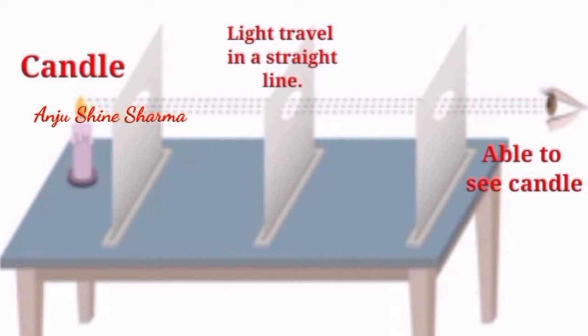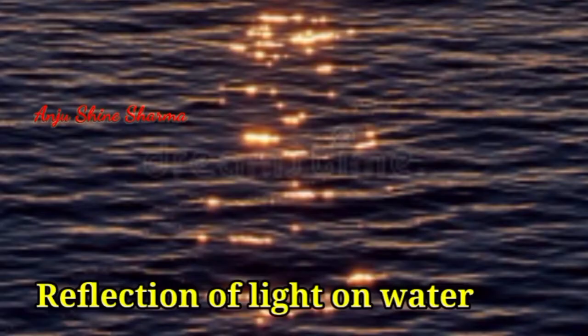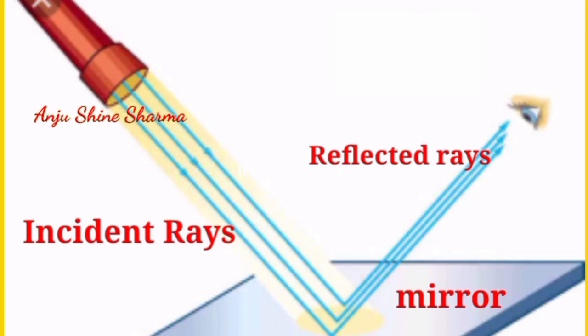You will be able to see the flame, which shows that light travels in a straight line. Reflection of light means when a light ray falls on a shiny object, the object sends the light ray back. This is called reflection. When light rays hit an object and bounce off, it is called reflection. When light falls on a mirror, the mirror reflects the light at the same angle at which it hits the surface.